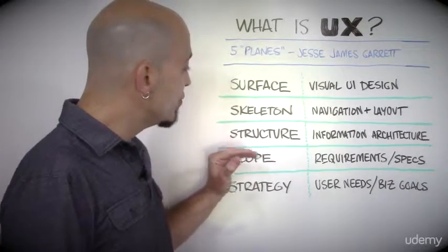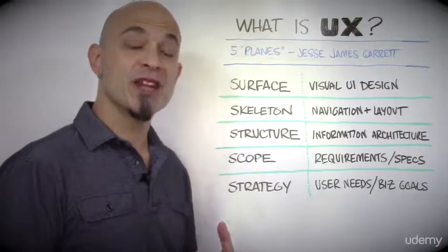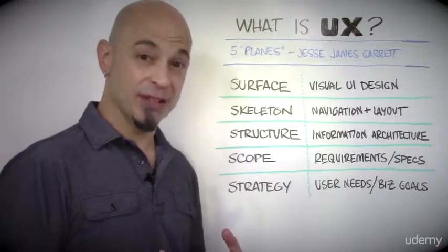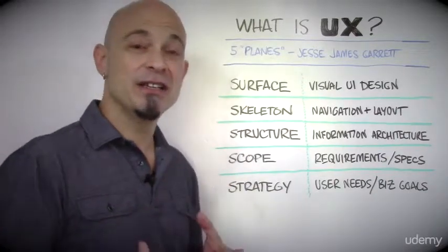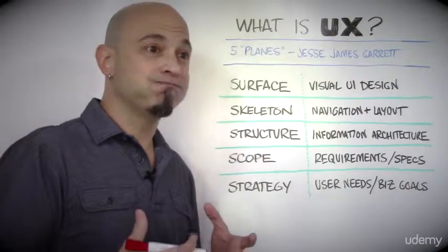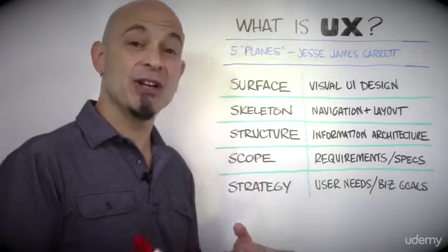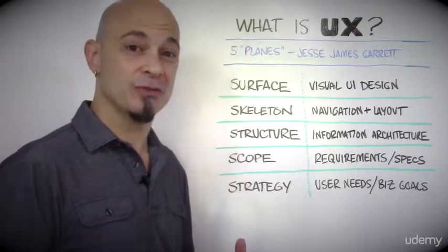We move to scope, which is requirements and specifications. What are we building? What functionality is included, how much of it needs to be included, and what can we realistically do?